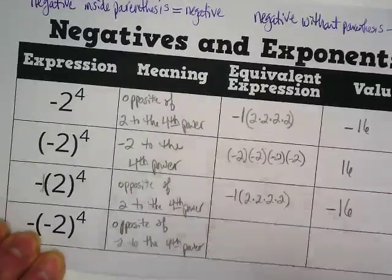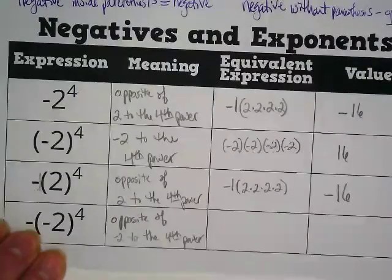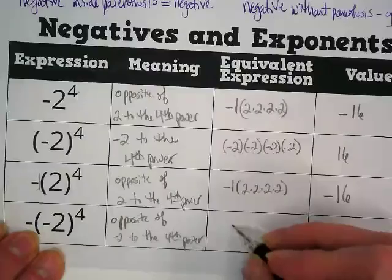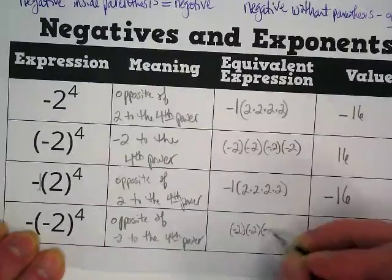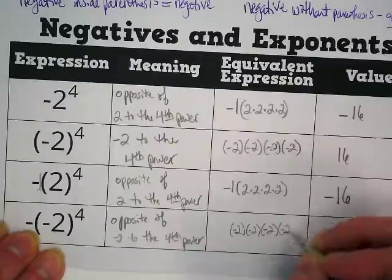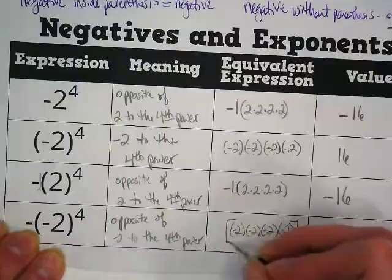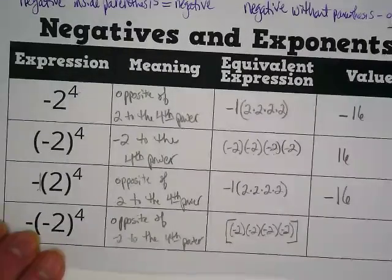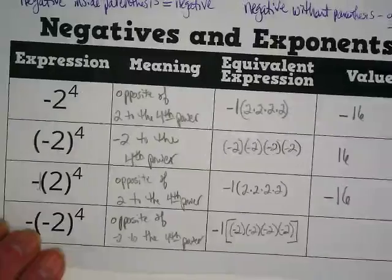So I'm going to show 4 negative 2s being multiplied by each other. And I'm going to put a fancy bracket thing on it. Because I want all of those negative 2s to be captured together. And then we get a negative 1 in front.